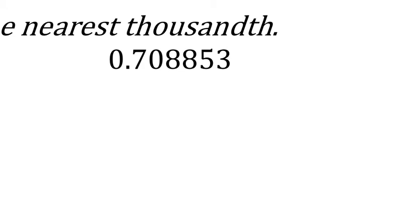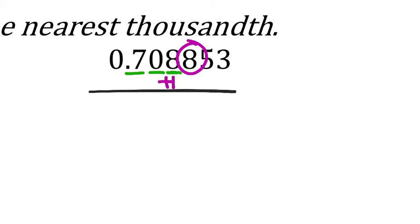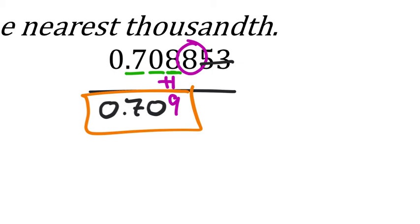Rounding to the nearest thousandth. The 7 is in the tenths, 0 is in the hundredths, the first 8 is in the thousandths place value. Look to the place immediately to the right — that's an 8. If it's 5 or more, add 1 to the target place value. 8 plus 1 is 9. So rounded to the nearest thousandth: 0.709.